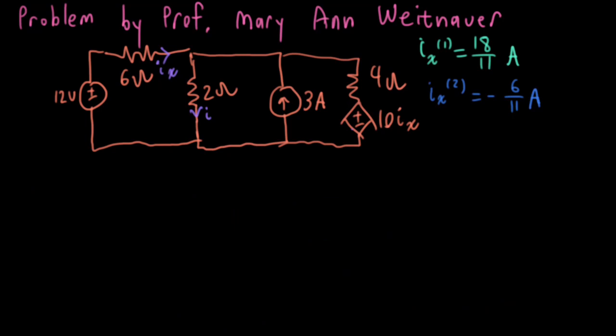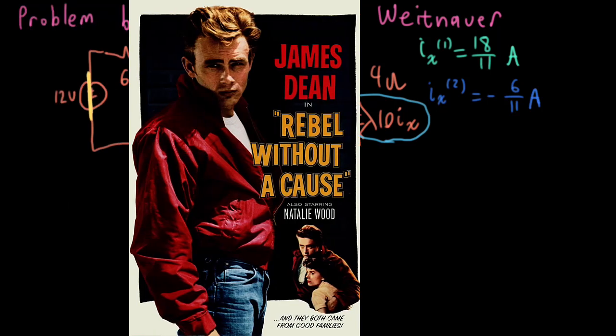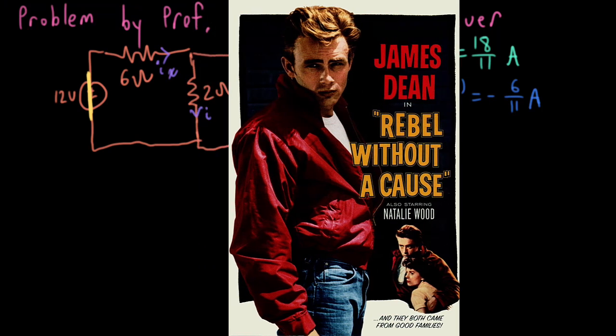Okay, now for the really tricky part, we'll take a look at the current controlled voltage source. So I'm going to deactivate the independent voltage source by shorting it. And I'm going to deactivate the current source by just getting rid of it entirely. And this is definitely something that the textbooks tell you you can't do. But I'm going to do it anyway, because I'm a rebel.